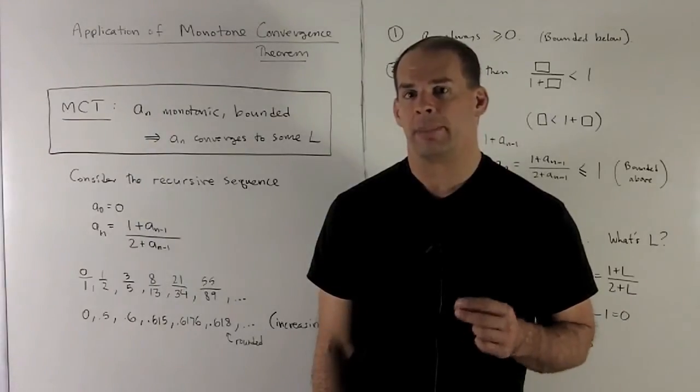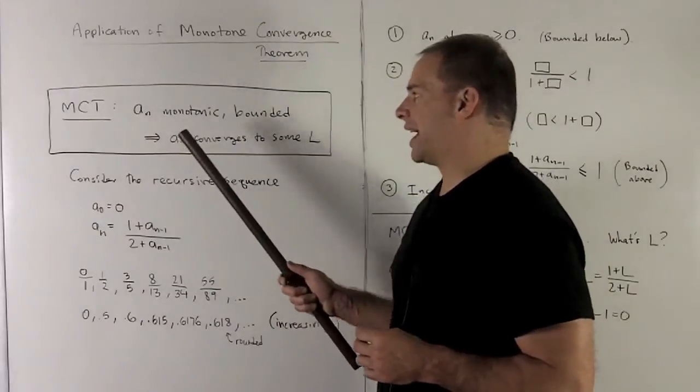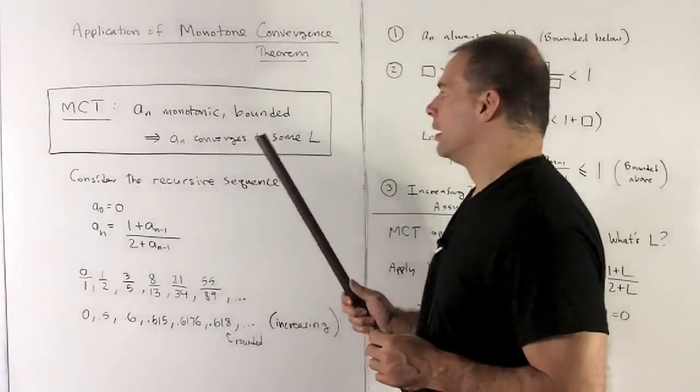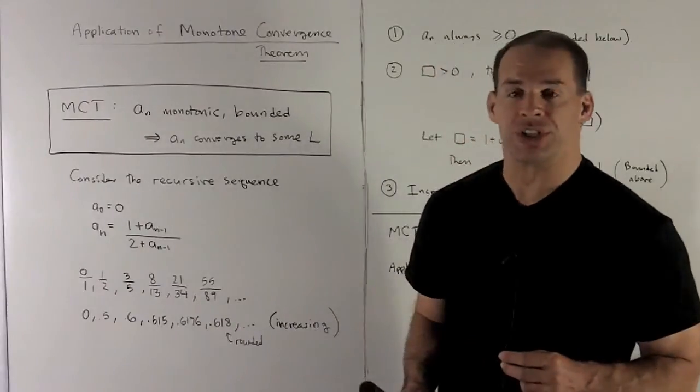Here's an application of the monotone convergence theorem. Our theorem says if a_n is monotonic and bounded, that means a_n converges to some L.